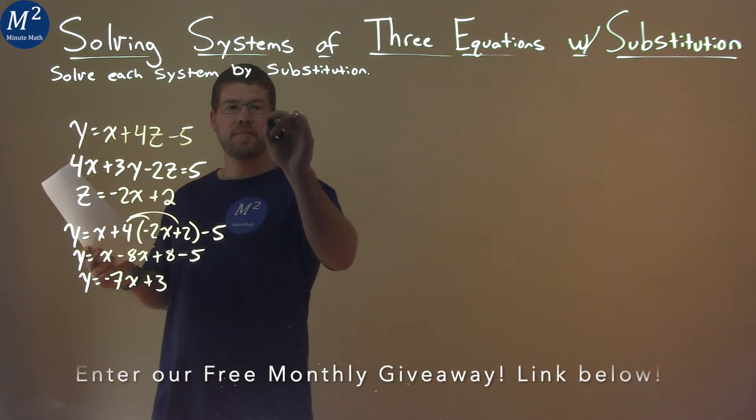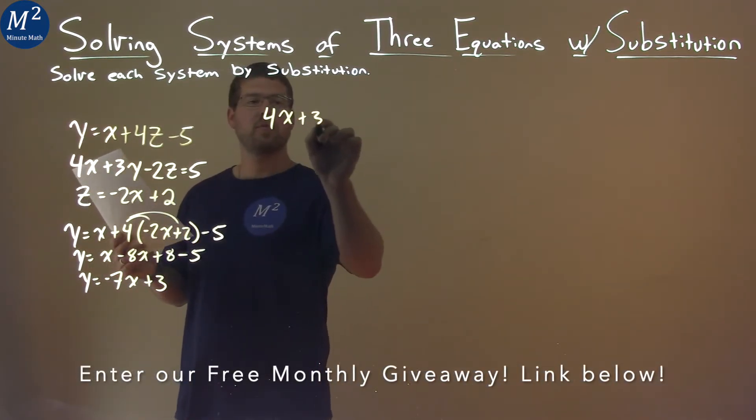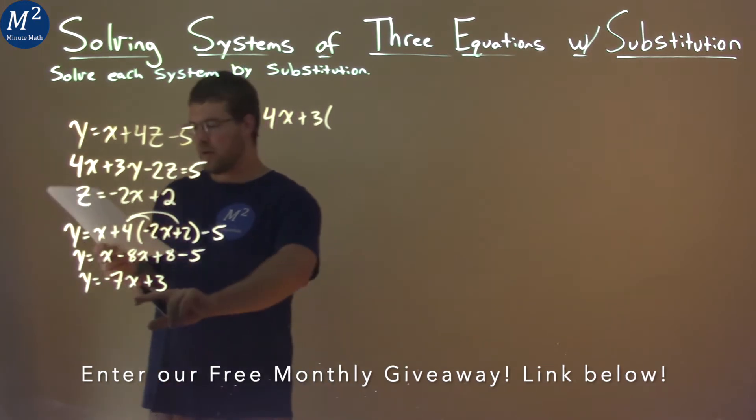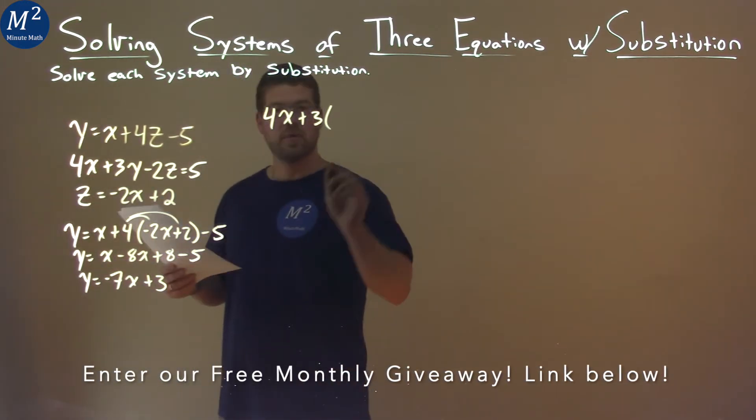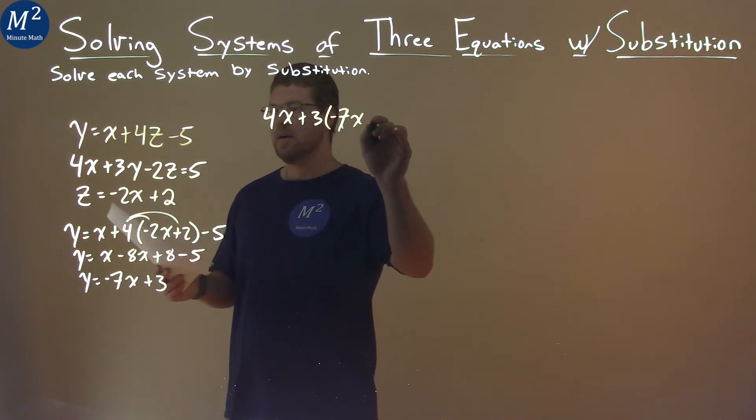So we have 4x, the second equation here, plus 3, and instead of y, I'm putting -7x + 3.